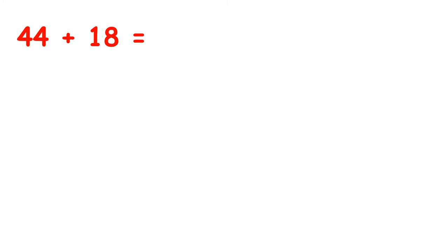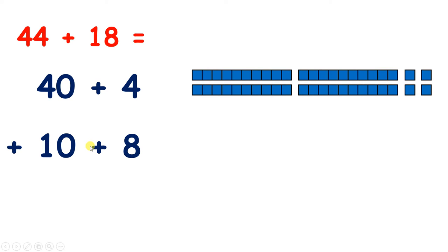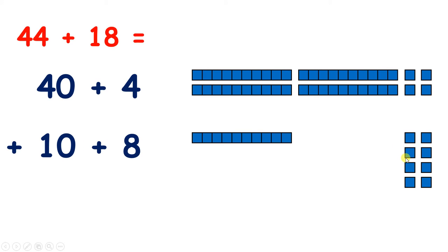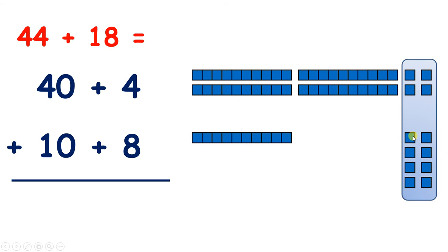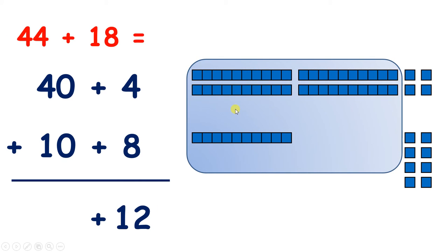Now we have 44 plus 18. So we have 40 plus 4: 4 tens and 4 units. And we have 10 plus 8: 1 ten and 8 units. So let's add, starting with the units. We have 4 plus 8, which is 12. And now we can add our tens: we have 4 tens plus 1 ten, or 40 plus 10, which is 50.